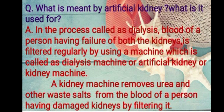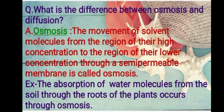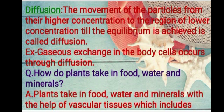Next question: what is the difference between osmosis and diffusion? Osmosis is the movement of solvent molecules from a region of higher concentration to a region of lower concentration through a semi-permeable membrane. Example: absorption of water molecules from the soil through the roots of the plant occurs through osmosis. Diffusion is the movement of particles from a region of higher concentration to a region of lower concentration until equilibrium is achieved. Example: gaseous exchange in body cells occurs through diffusion.